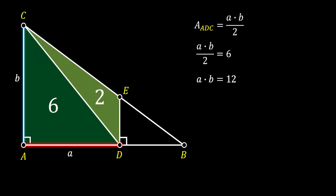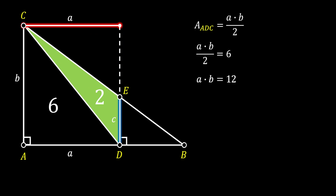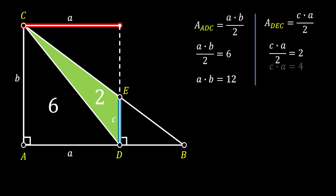Next, let's have a look at triangle DEC. We can say that DE is the base of this triangle and we can label it as c. Then the line AD will represent the height of this triangle and it will have the length of a. So the area of triangle DEC is equal to the product of its base c and the height a over 2. Since we know that the area of this triangle is equal to 2, we can substitute this value in and simplify to get that c times a is equal to 4.